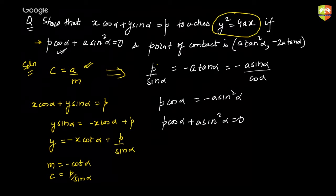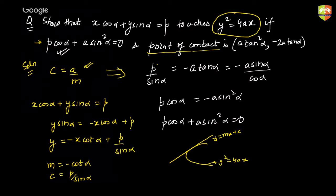Now for the point of contact: let's go back to the case where y² = 4ax and the line y = mx + C was touching it. What is your point of contact in terms of a, m, and C? Since C is already a/m, can you tell me the point of contact coordinates in terms of a and m?